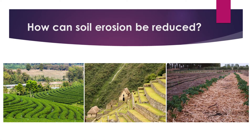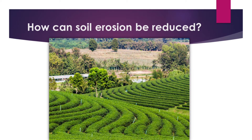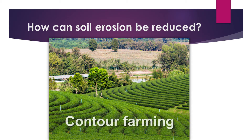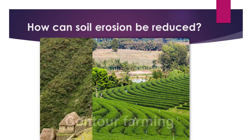Let's ask ourselves how we could reduce the effects of soil erosion. Looking at the picture, we can see different soil conservation methods — what can be done to protect the soil and prevent it from being washed away. The first example shown is contour farming, where crops are planted following the contour of the land as we descend the slope.